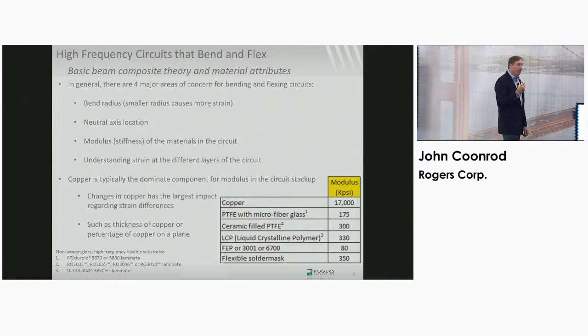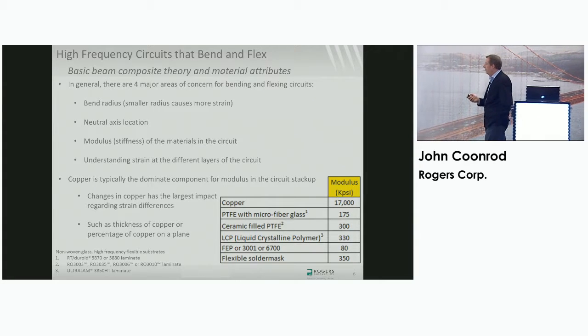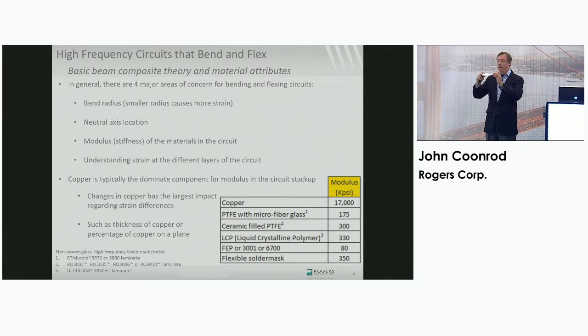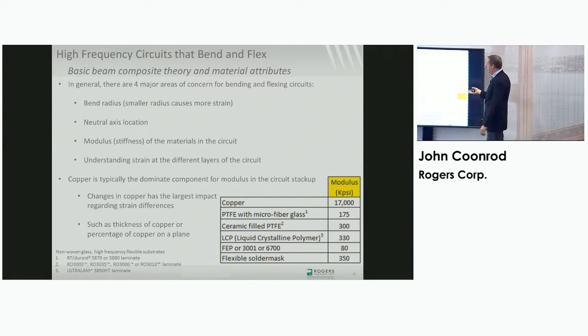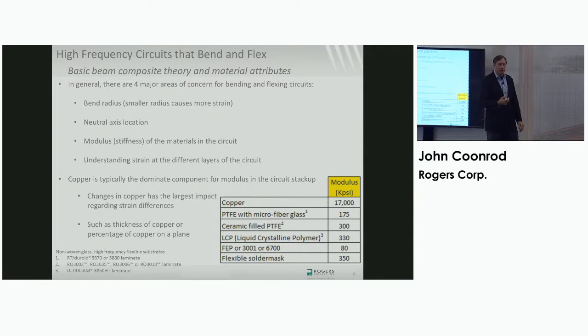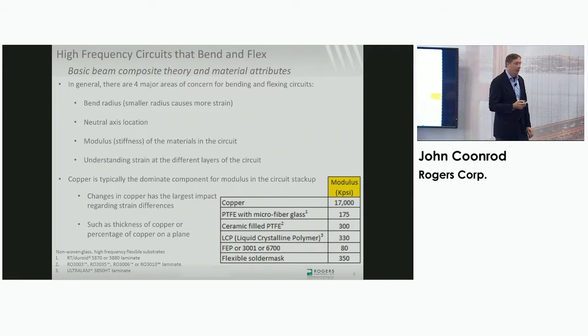There's four items that are really important when you're thinking about flexing and bending. The four items are bend radius, neutral axis location for modeling and understanding what areas and what layers of the circuit are problematic or could be, the modulus, how stiff each layer is, and finally, understanding the strain on the different layers. That's extremely important to know.